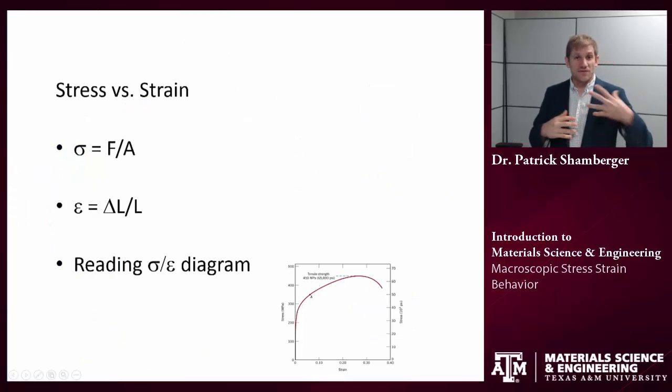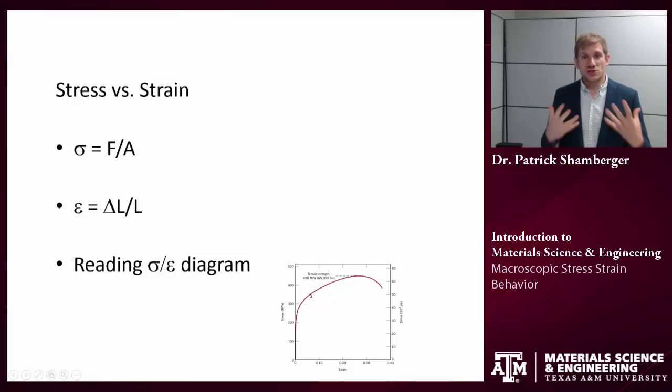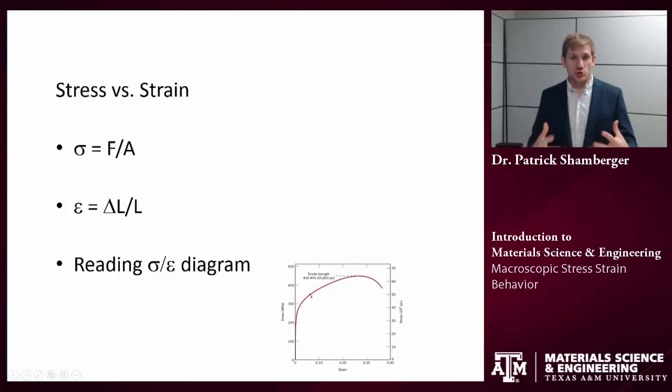In summary, we've defined what stress is: force per unit area. We've defined what strain is: elongation per original unit length. We use stress and strain because we want to get at intrinsic material properties. We want to get away from forces and elongations which are dependent on the volume of material that you're looking at.